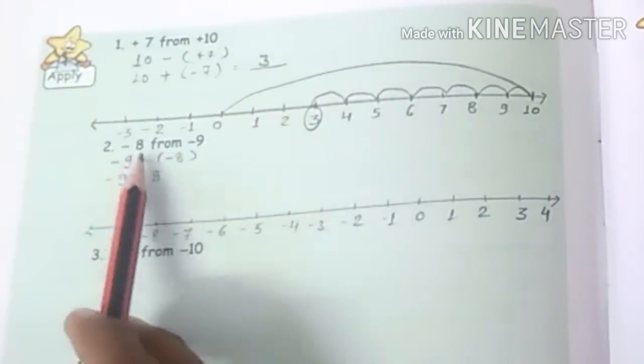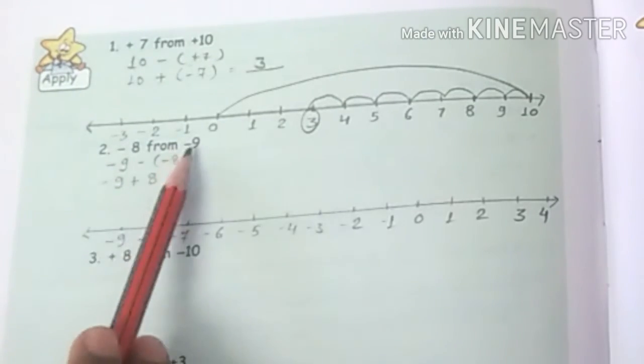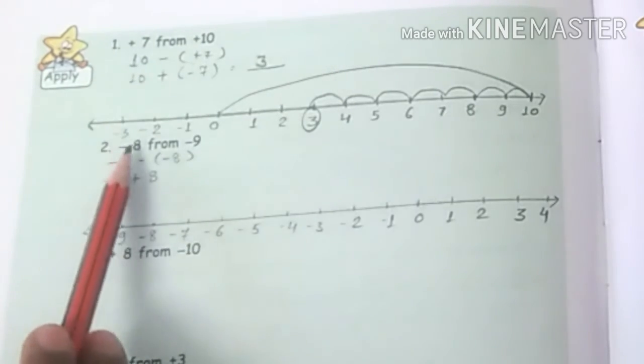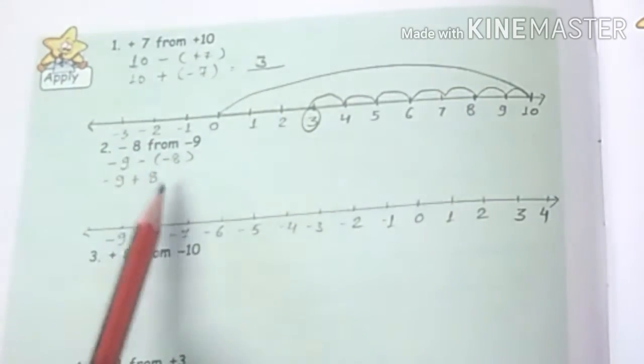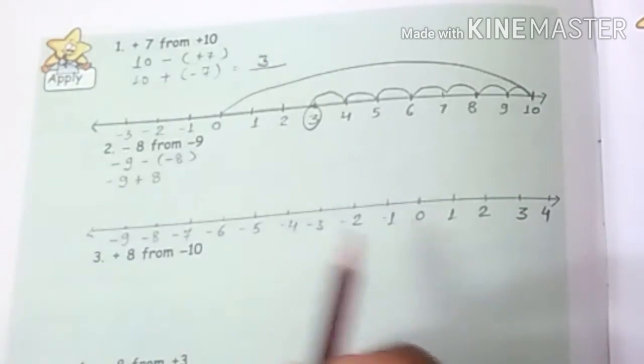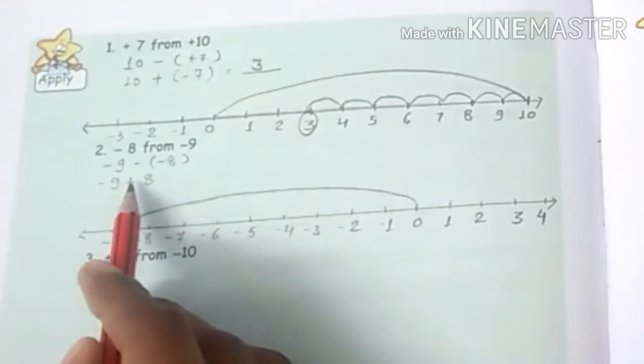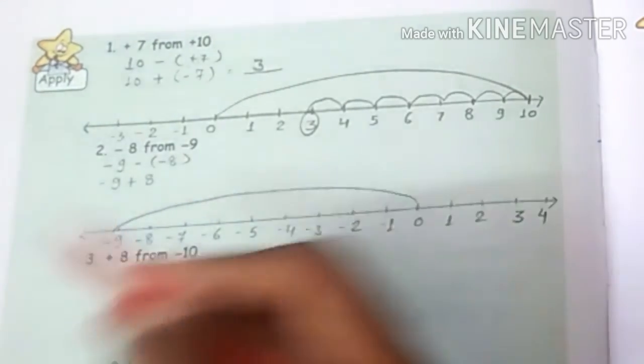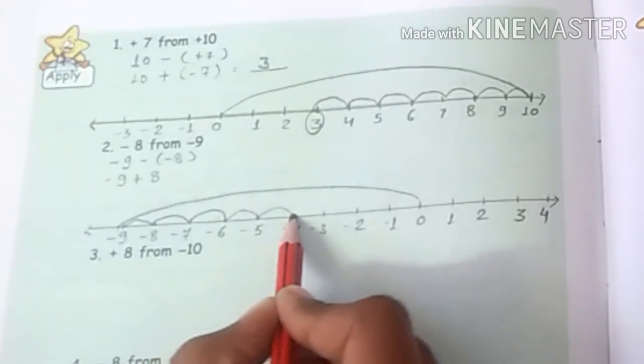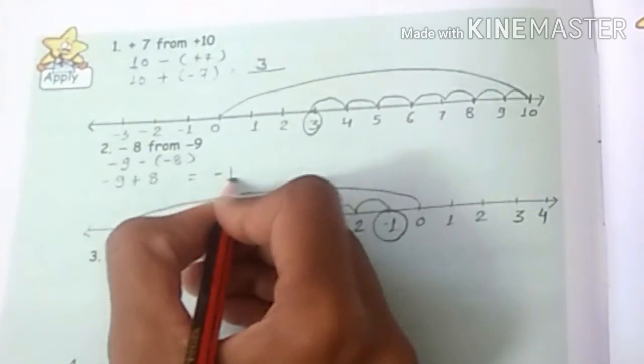Now question number 2: minus 8 from minus 9. So minus 9 minus minus 8. First you will write minus 9, then we will add the opposite of minus 8, which is plus 8. So first you have to go to minus 9. It means 0 to minus 9 and negative number is left hand side. Then we will add positive 8, so positive number is on the right hand side. It means we will go right hand side and the answer is minus 1.